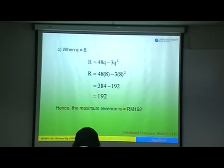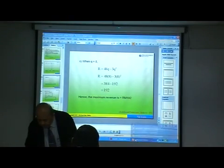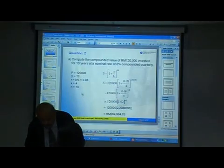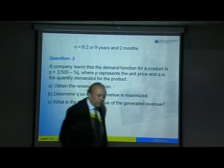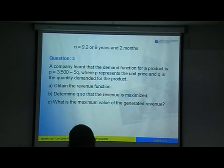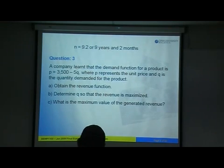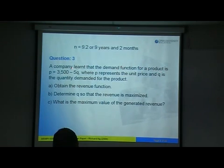So the maximum revenue equals 192. Now let's look at the January exam paper, slides 9 to 11. Try to answer this quickly. This is the January 2009 paper, worth 20 marks. If you can do this, you'll have no problem with the actual exam paper.